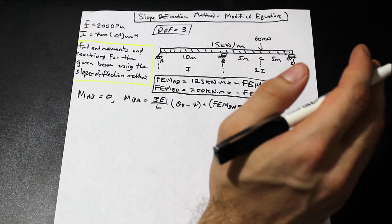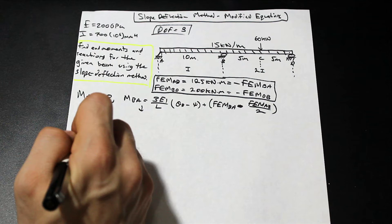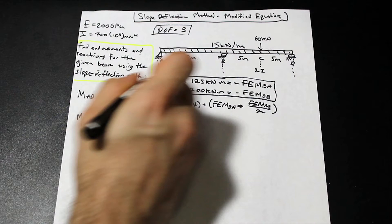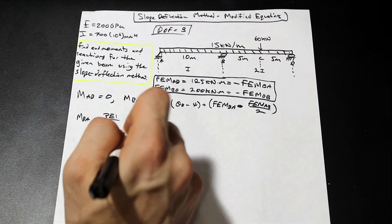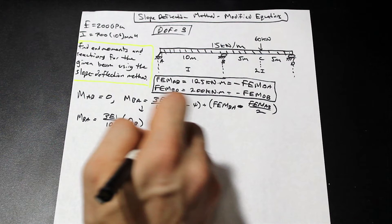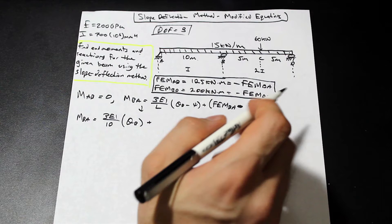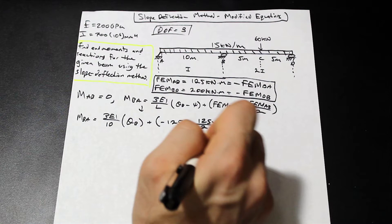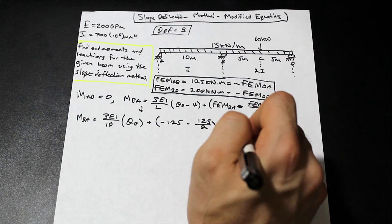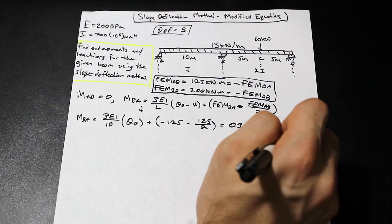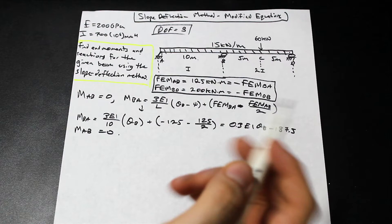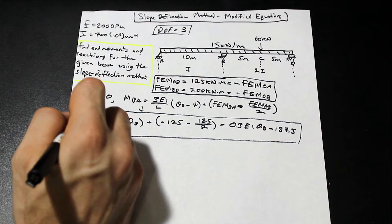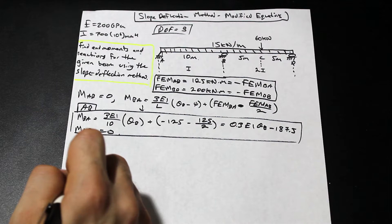Let's plug in our values. For section AB, L is 10 and I is just I. Theta_b is unknown, there's no psi. FEM_ba is −125, so that's −125. Minus FEM_ab: FEM_ab is 125, so we have 125/2. With M_ab equal to zero, solving that out we get M_ba = 0.3EI * theta_b − 187.5. And M_ab equals zero.